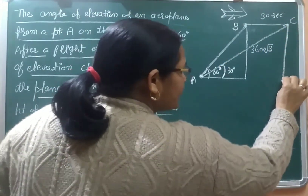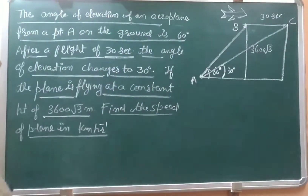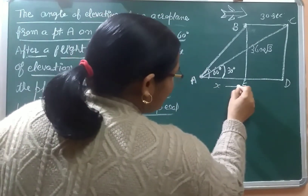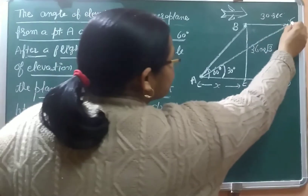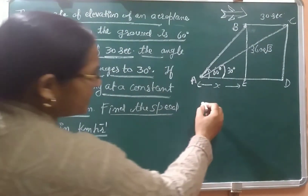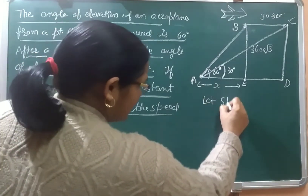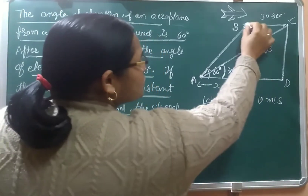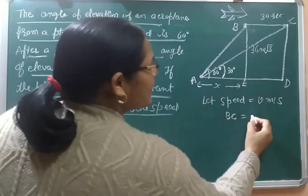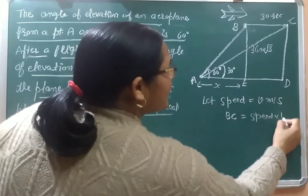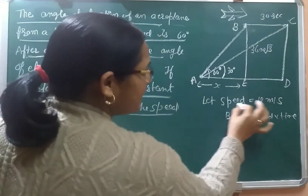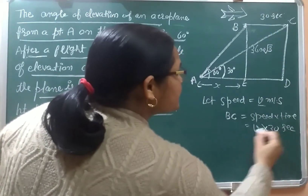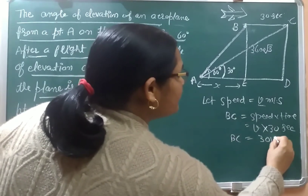The height of the aeroplane from the ground remains the same: 3600√3 meters. We label points A, B, C, D, and E. This distance AE we suppose as x. The distance BC is covered by the aeroplane in 30 seconds. Let the speed of the aeroplane be V meter per second. So the distance BC = speed × time = V × 30 = 30V meters.